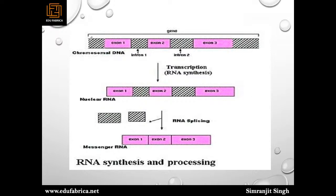During this time, RNA processing is happening. Our chromosomal DNA has exon parts — exon 1, 2, 3 — and also intron parts — intron 1 and 2. During transcription, which is RNA synthesis, all the intron parts are removed through splicing. In the resulting messenger RNA, we have exon 1, exon 2, and exon 3. This is known as RNA synthesis and processing — a very brief summary of a subject that takes 5 to 6 lectures in molecular biology.